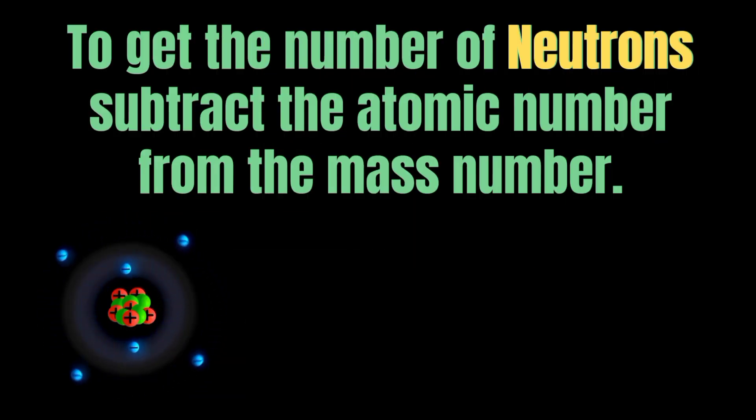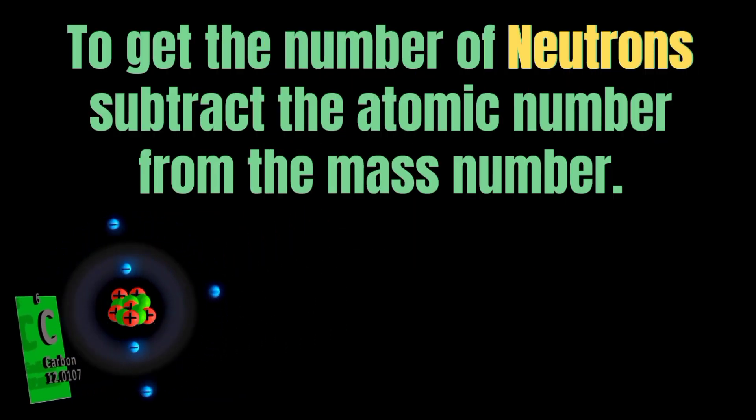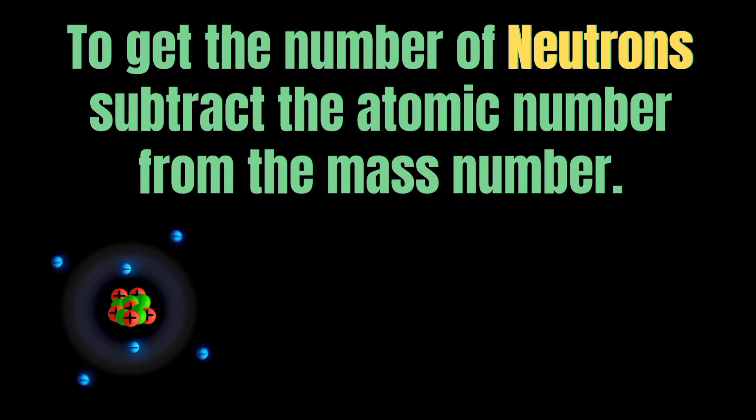To get the number of neutrons, subtract the atomic number from the mass number.